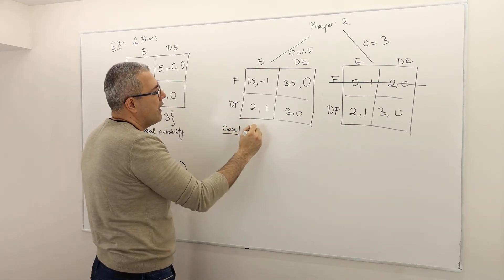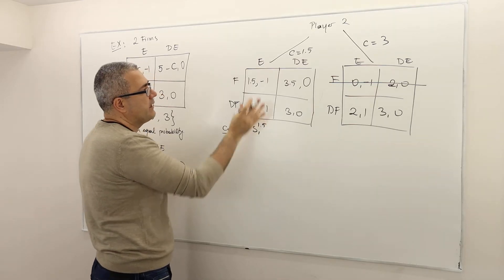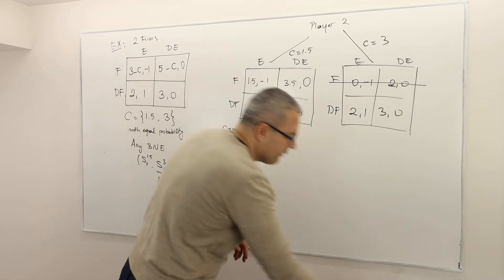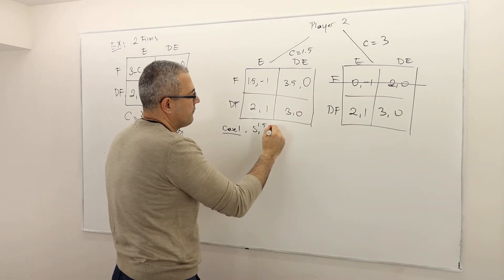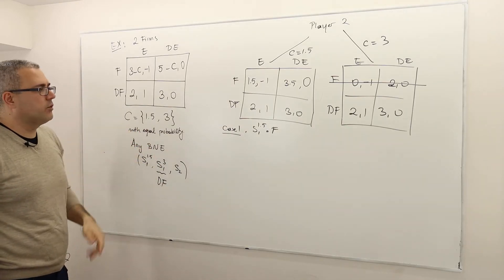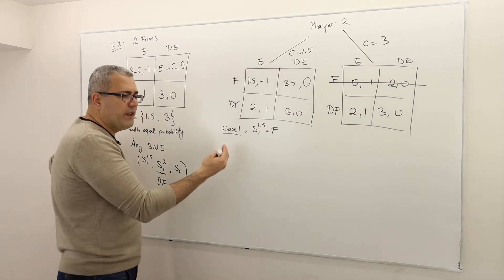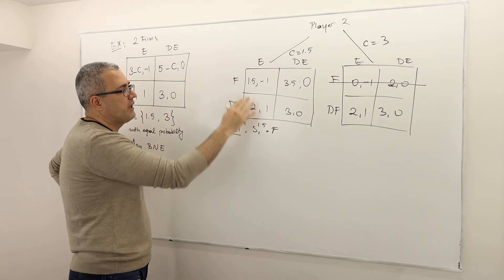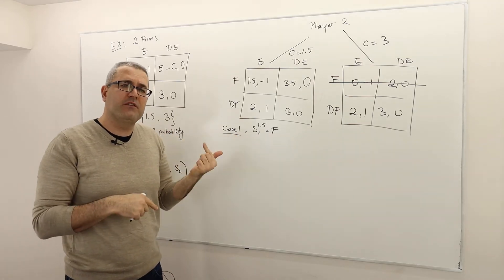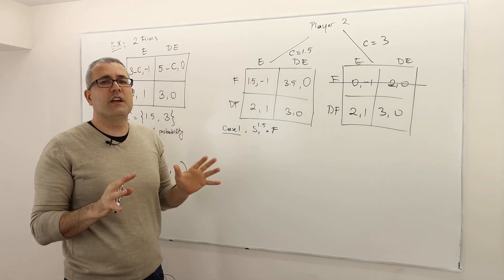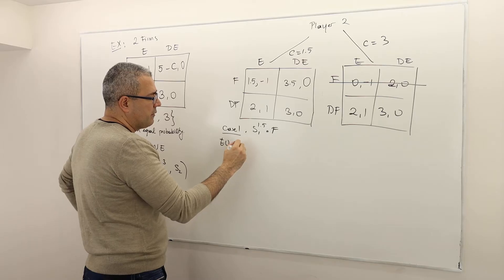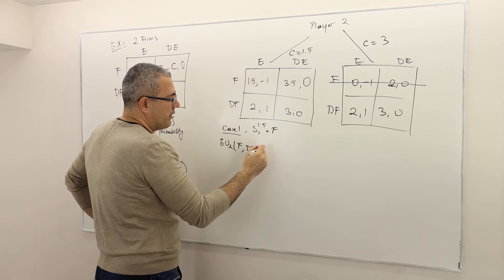Obviously there are two scenarios we should consider. Case 1: is there any Bayesian-Nash equilibrium where player 1 plays fight here and don't fight here? Don't forget, I assume the probabilities are one-half, one-half. So here we first — because I assumed S1 — the player 1 strategy is going to be fight here. I should be looking at the best response of player 2, and then check if this strategy is going to be a best response for player 1. If it is not, then there's no such Bayesian-Nash equilibrium.